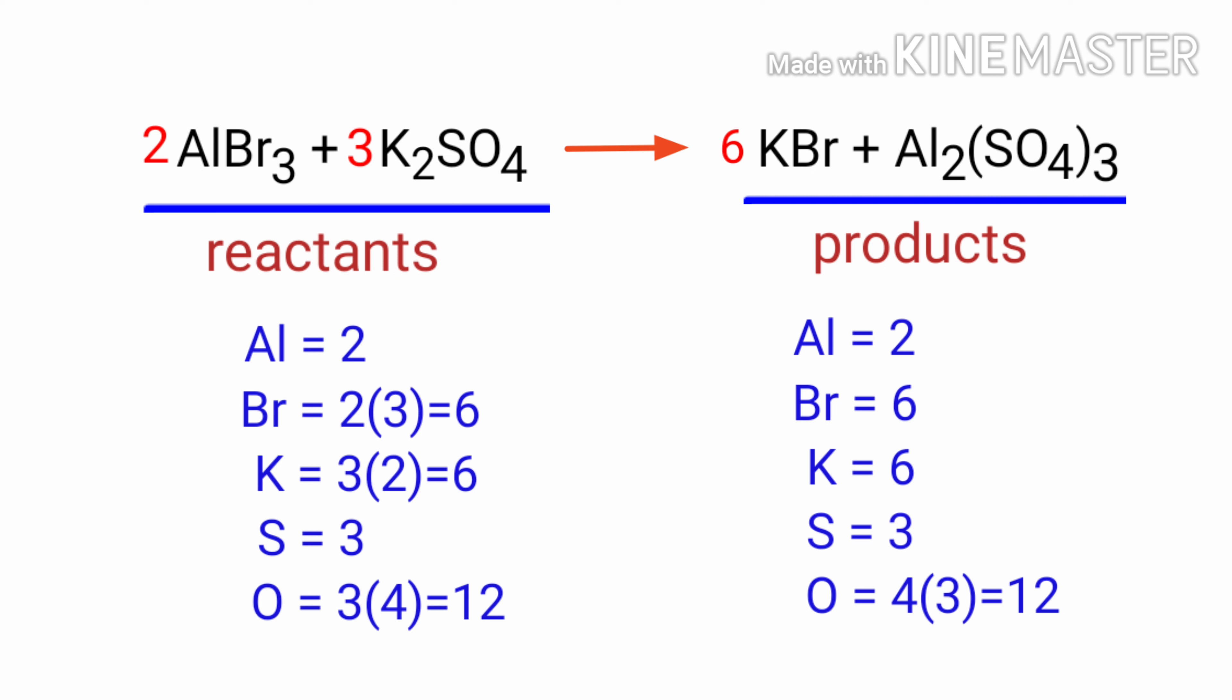The equation is balanced. There are 2 aluminum atoms, 6 bromine atoms, 6 potassium atoms, 3 sulfur atoms, and 12 oxygen atoms on both sides.